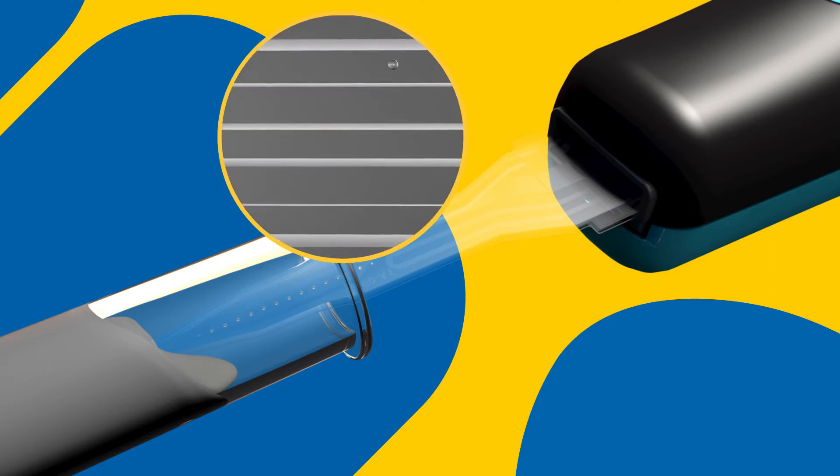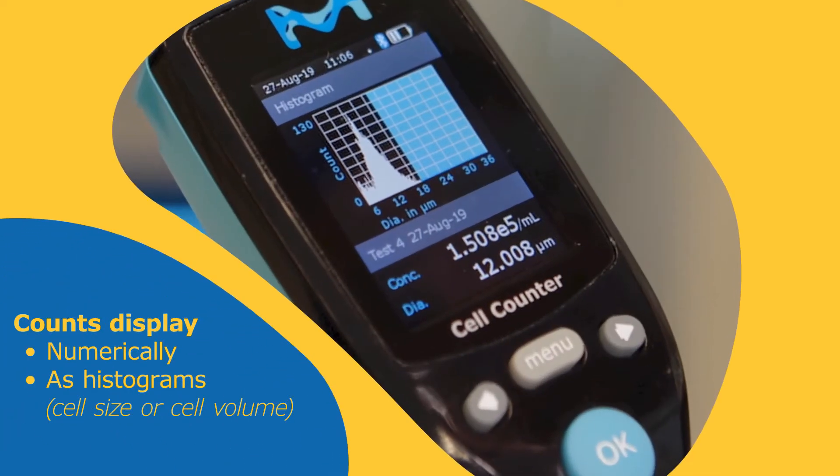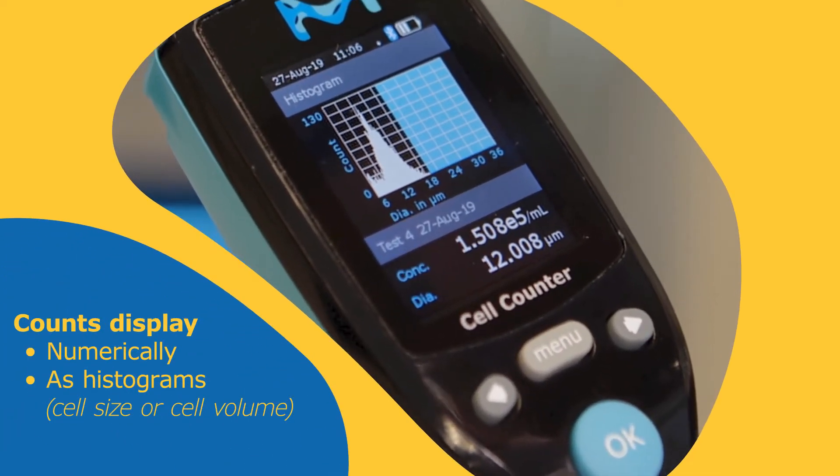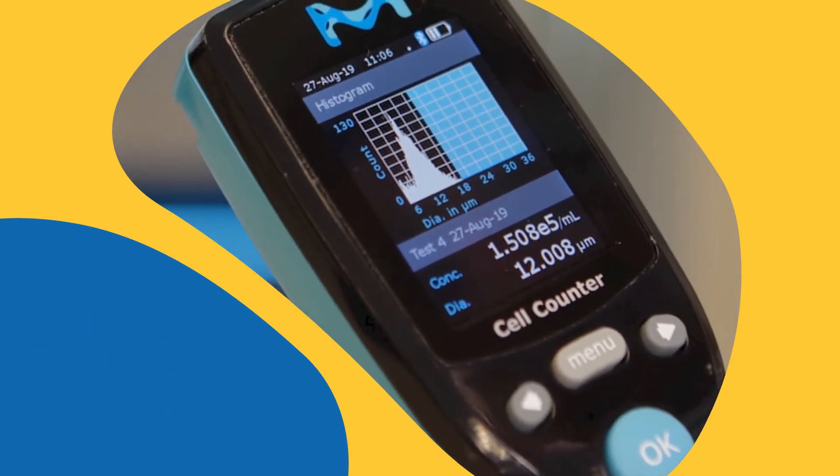Precise counts are returned in less than 30 seconds. Counts are displayed along with a histogram of the cell population by cell diameter or volume as chosen by the user. The large, easy-to-read display provides instant confirmation of count.